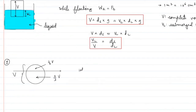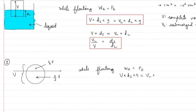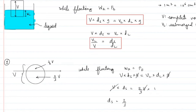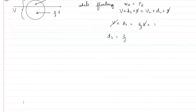While floating, weight in air equals upthrust. So complete volume times density of solid times G equals submerged volume times density of liquid times G. Here, V and G cancel. The submerged part is two-thirds, and density of water is 1. So density of solid equals two-thirds, which is 0.67 gram per centimeter cube.